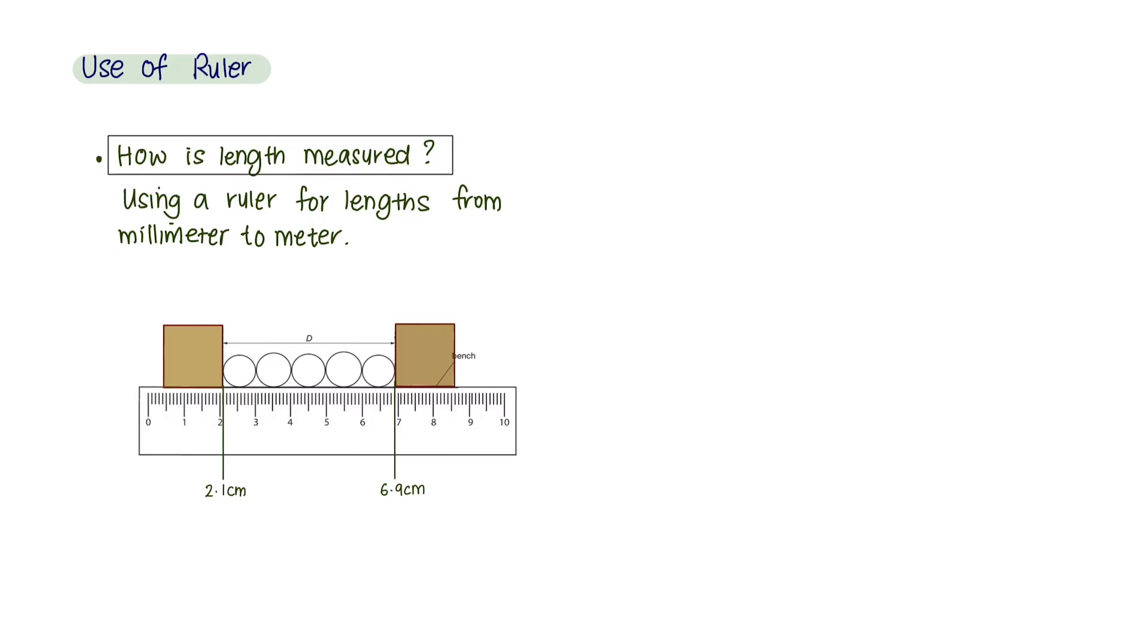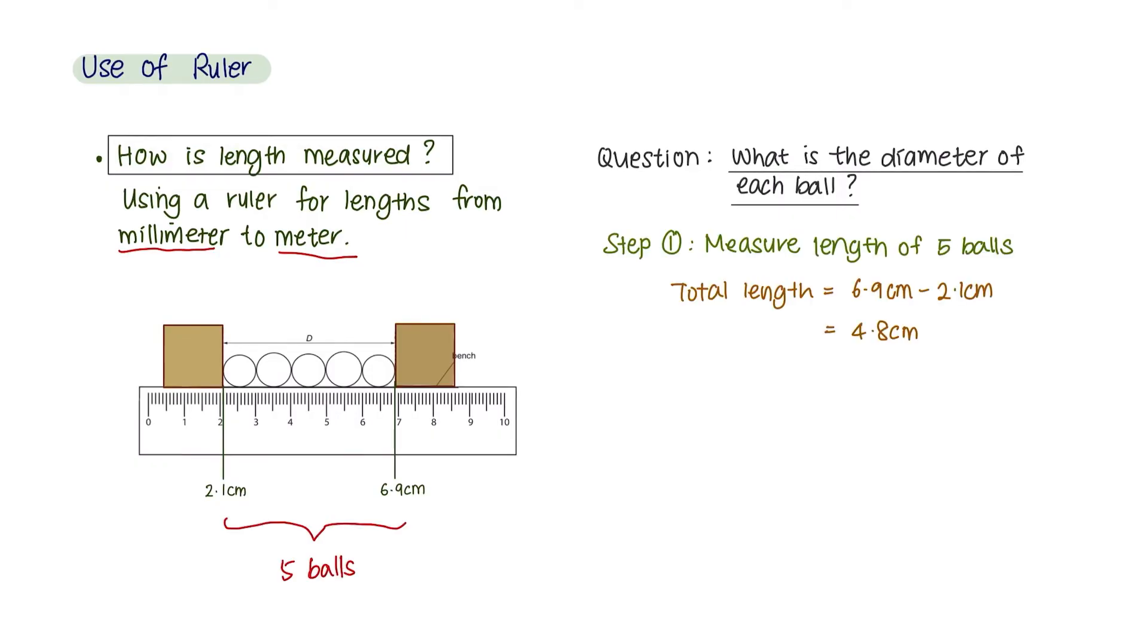Rulers can be used to measure small distances from millimeters to meter. This is an example question to calculate the diameter of one ball. Step 1 is to measure the length of 5 balls, and we can do that by subtracting 2.1 cm from 6.9 cm.